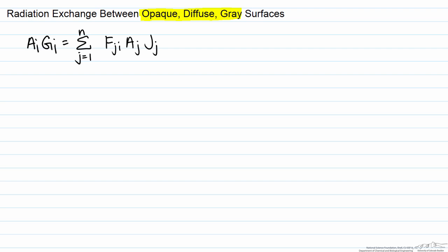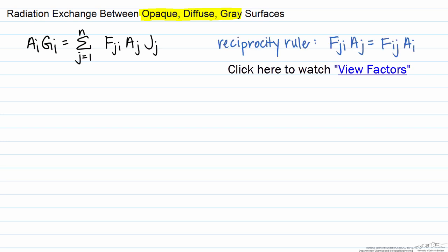By the reciprocity rule, which was discussed in the screencast on view factors, Fji times the area Aj is equal to Fij times Ai.